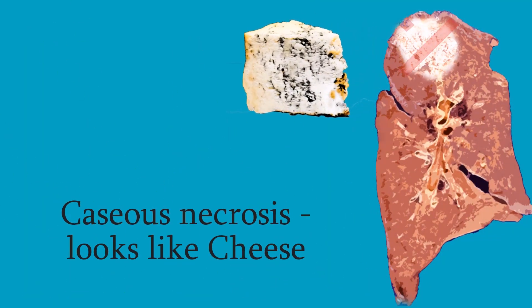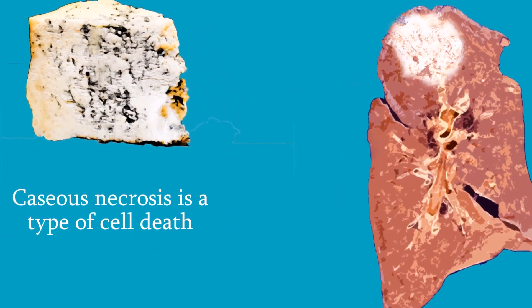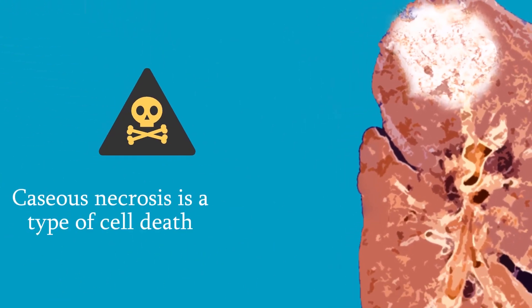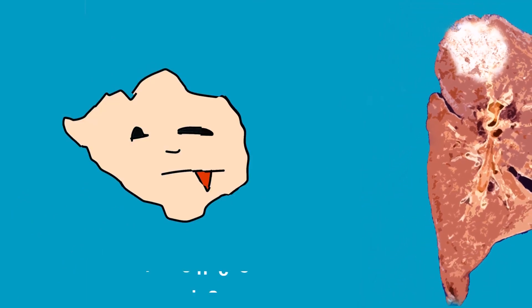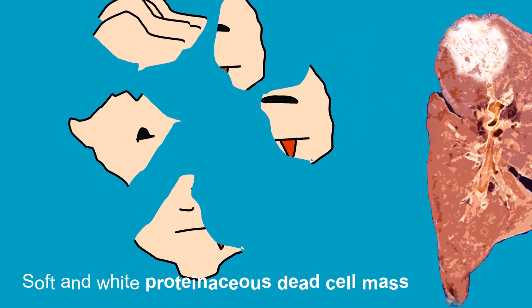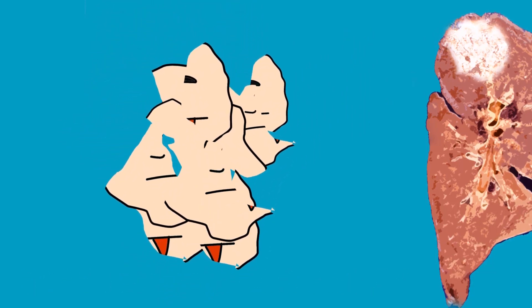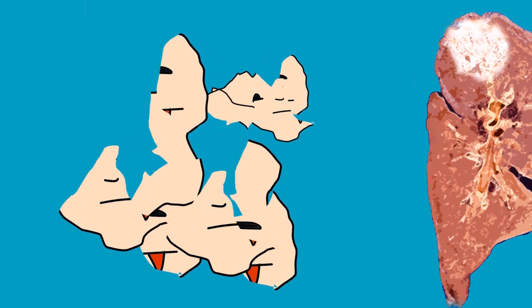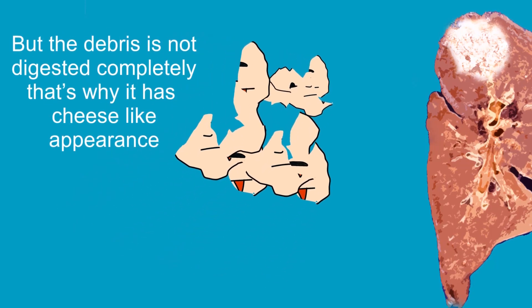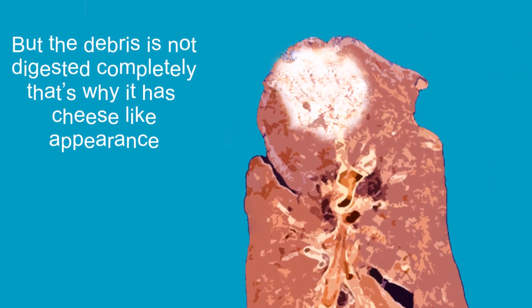If dead tissue looks like a cheese, it is caseous necrosis. Caseous necrosis is a type of cell death. The dead tissue appears as a soft and white, protein-rich dead cell mass. The dead cells disintegrate and tissue architecture is not preserved. But the debris is not digested completely — that's why it has a clumped, cheese-like appearance.